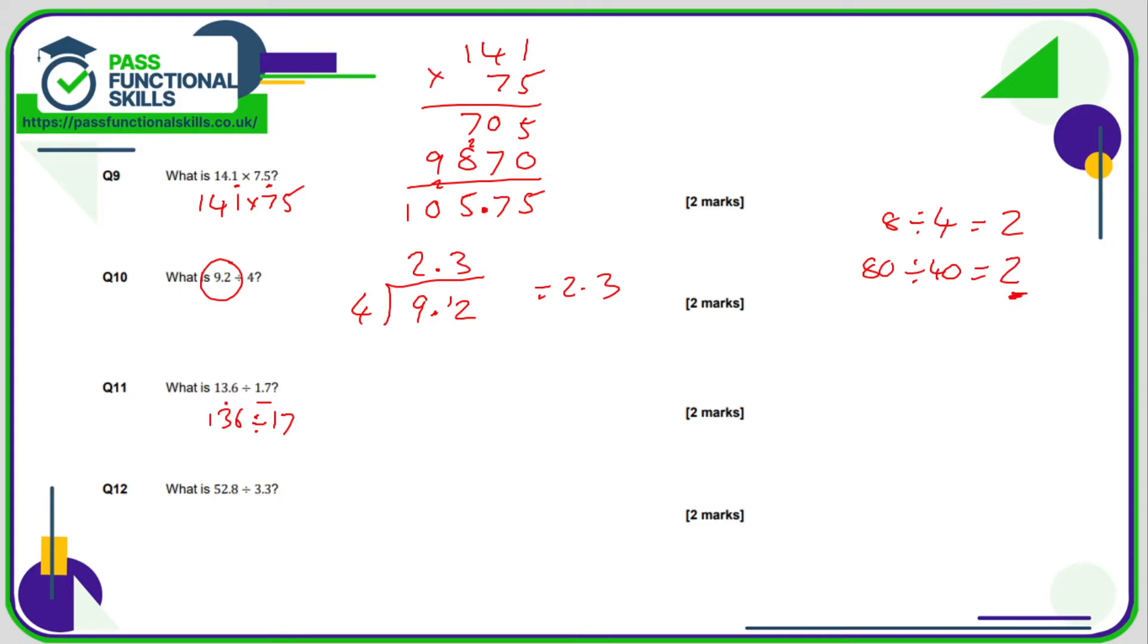So 13.6 divided by 1.7 is the same question as 136 divided by 17. But by multiplying by 10, I've made it a bit easier because we're dealing with whole numbers, not decimals. However, the question is still really horrible because obviously we don't know our 17 times table very well. And we could try the bus stop method, but I'm not sure this is going to work very well. How many 17s go into 1? 0. Move the 1 over. How many 17s go into 13? 0. Move the 13 over. How many 17s go into 136? Well, that was the original question.